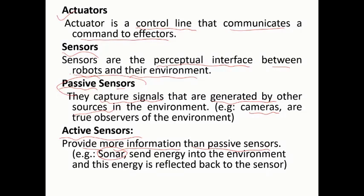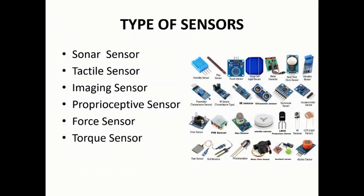Active sensors provide more information compared to passive sensors. For example, sonar is a more advanced audio signal sensor. Active sensors send energy into the environment, and that energy is reflected back to the sensor. Think of solar panels on satellites as advanced active sensors — they send energy into the surroundings and receive energy reflected back to the sensors inside those satellites.